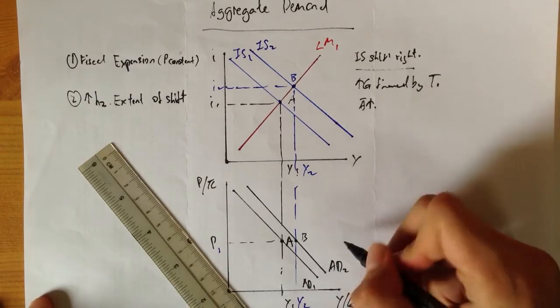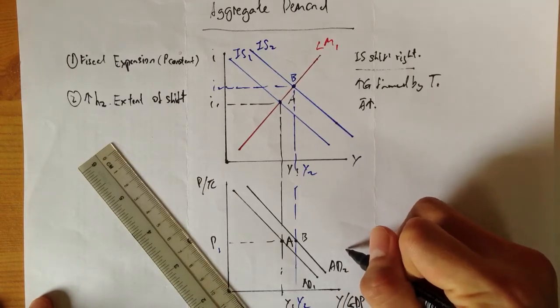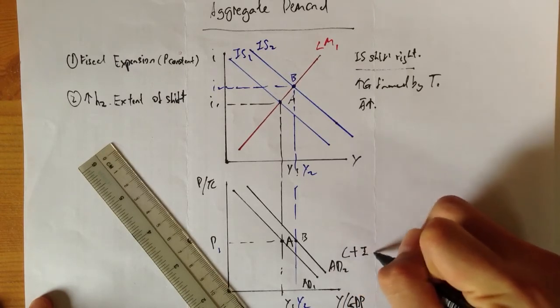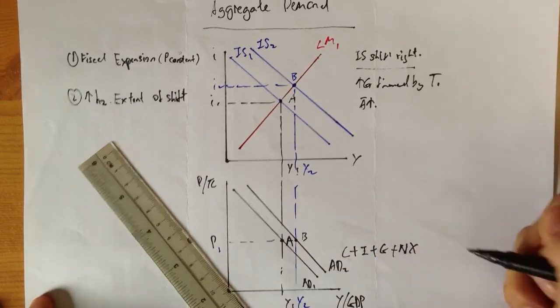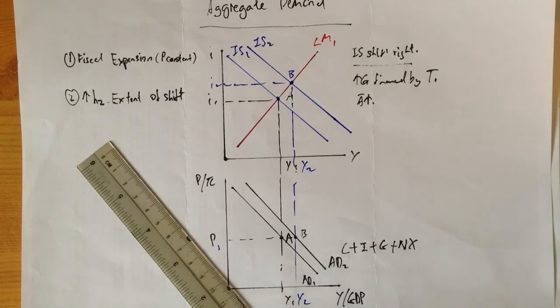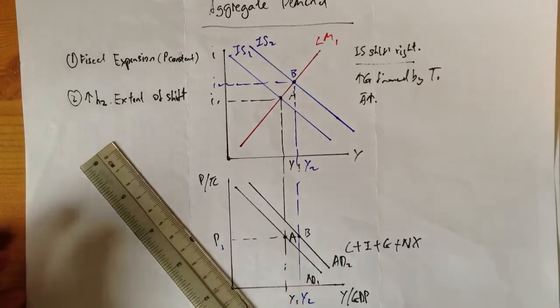This is basically how a fiscal expansion can cause a shift in AD. Because we know that your AD comprises of consumption, plus investment, plus government spending, and your net export.